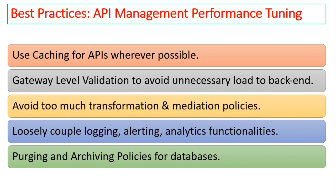You should also avoid excessive transformation and mediation policies. Mediation and transformation policies provided by API management platforms are very useful and helpful, but you should be smart about when exactly you need them. Unnecessarily applying many mediation policies and manipulating request and response XML or JSON before forwarding to the next party results in throughput degradation. Use mediation policies and transformations only when truly needed, and whenever you do use them, follow the best practices specific to those transformers and mediation policies to avoid added latency for API calls.